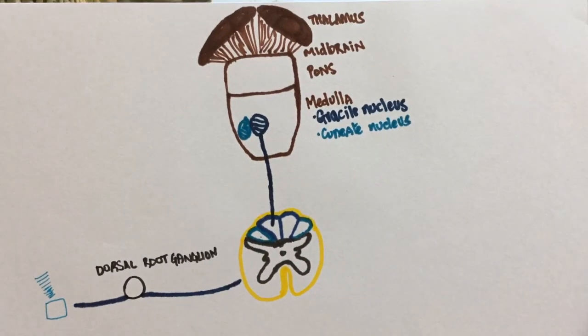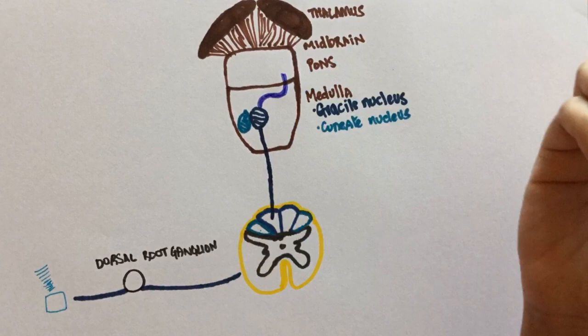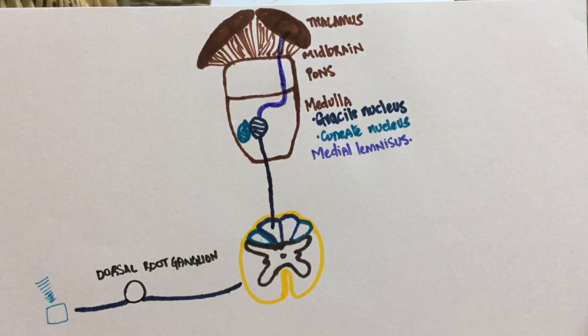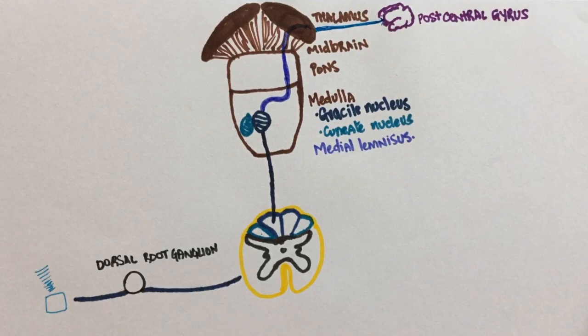At the medulla, it undergoes decussation — this means it switches sides. Once it has decussated, it is known as the medial lemniscus. This is why this pathway is also known as the dorsal column medial lemniscus pathway. From here, it goes to the thalamus. From the thalamus, it travels all the way to the postcentral gyrus of the cortex. The postcentral gyrus is the primary sensory cortex.